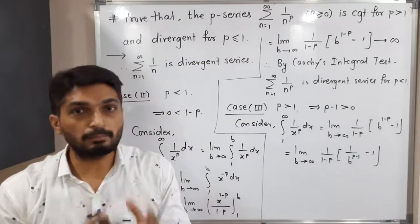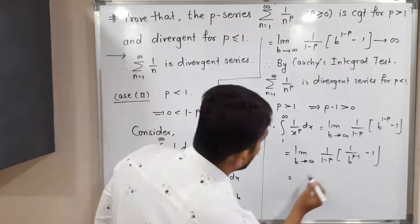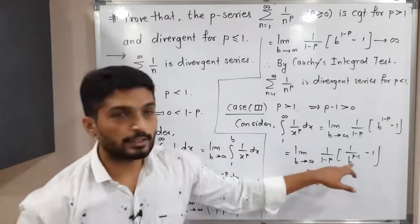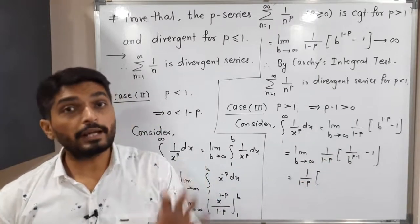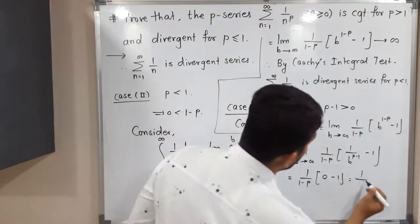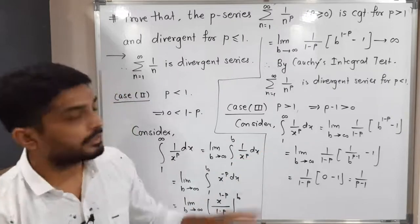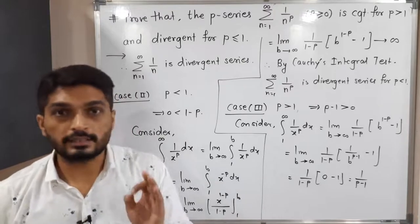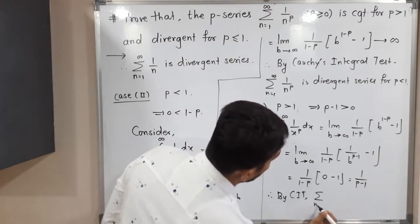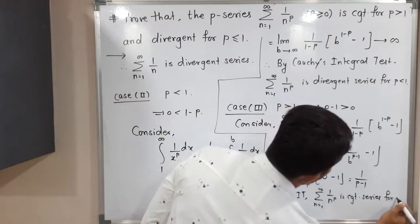Now b has a positive power in the denominator. Applying the limit as b tends to infinity: the term 1/(1−p) is independent of b, and 1 divided by b^(p−1) goes to 0 since b tends to infinity. So we get 0 minus 1, giving us −1/(1−p), which equals 1/(p−1). This is a finite value, so by Cauchy's integral test, the series summation 1/n^p is convergent for p greater than 1.